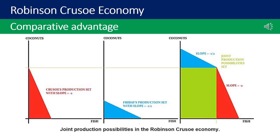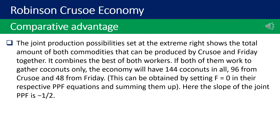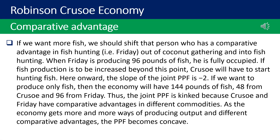The joint production possibilities set shows the total amount of both commodities that can be produced by Crusoe and Friday together — it combines the best of both workers. If both work to gather coconuts only, the economy will have 144 coconuts in all: 96 from Crusoe and 48 from Friday. This is obtained by setting F = 0 in their respective PPF equations and summing them. Here the slope of the joint PPF is −1/2. If we want more fish, we should shift Friday — who has a comparative advantage in fish hunting — out of coconut gathering and into fish hunting.